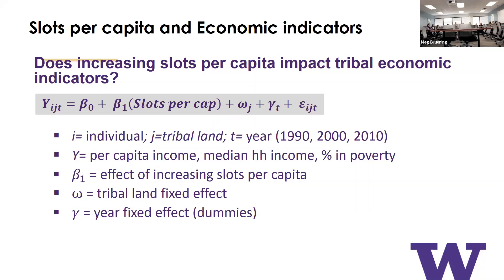We use fixed effects models, which compare each community to itself over time. This controls for time-invariant aspects like rurality, food environment, and culture, by basically doing a differencing model. We first check whether our slots per capita variable is associated with economic indicators. We found that opening or expanding a casino was associated with improvements in per capita income, marginally significant improvements in median household income, and importantly, decreases in the percent of the population living in poverty — suggesting the economic benefits are reaching lower-income tribal members.